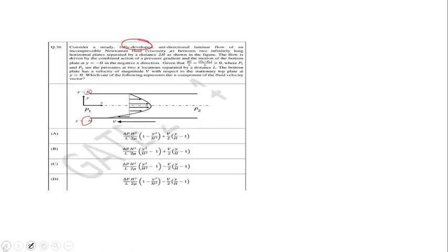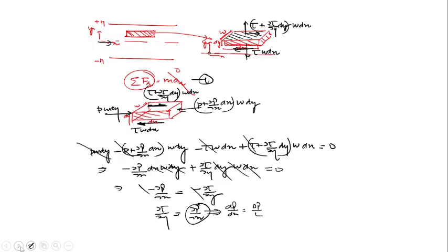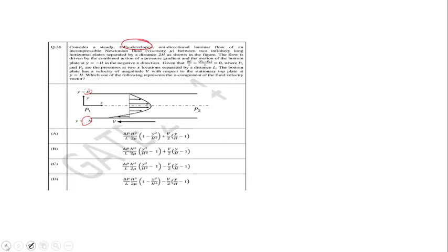Looking at the question, delta_p is given as p1 minus p2 over l. The answer choices are expressed in terms of delta_p, where delta_p equals p1 minus p2 as per the notation in the problem. Writing in terms of p2 minus p1 over l, we need to be careful: dp over dx equals p2 minus p1 over l.